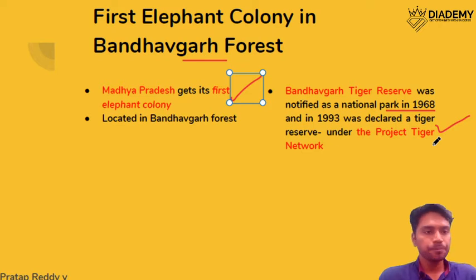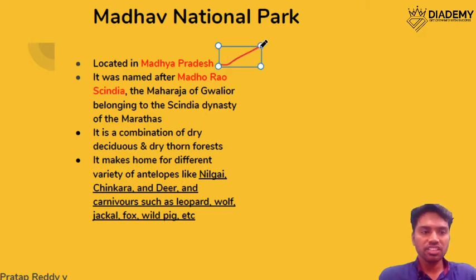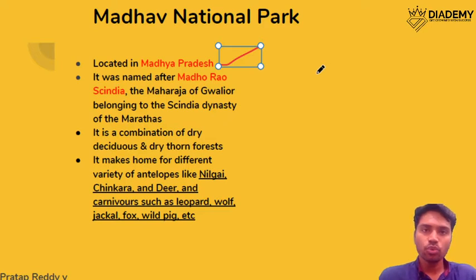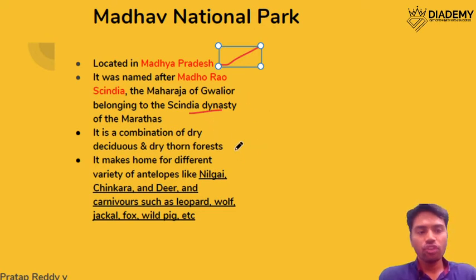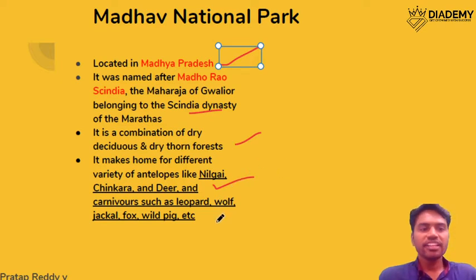The next topic is Madhav National Park, which is also in Madhya Pradesh. It is named after Madhav of the Scindia dynasty, a ruler of the Marathas. It is a combination of dry and dry thorn forest and is home to different varieties of antelopes like chinkara, nilgai, and deer. It also has carnivores like leopard, wolves, jackal, fox, and wild boar.